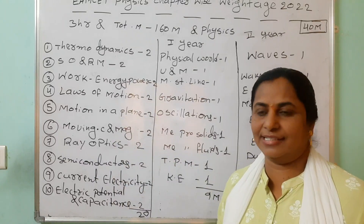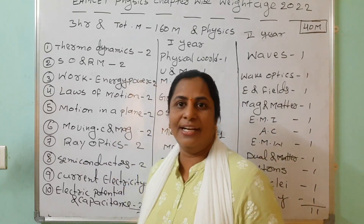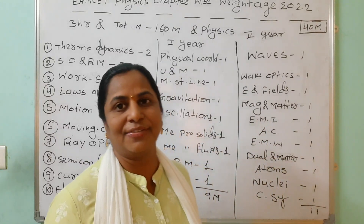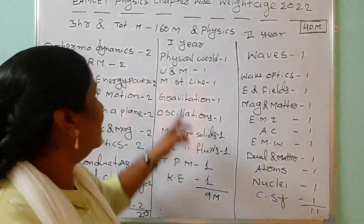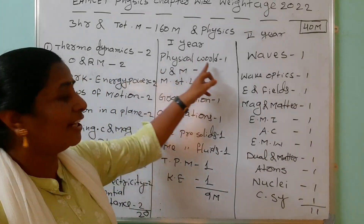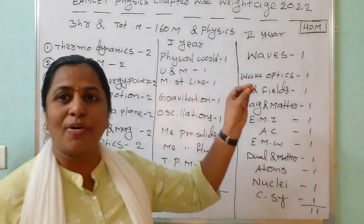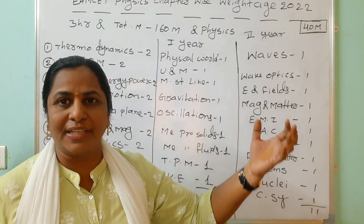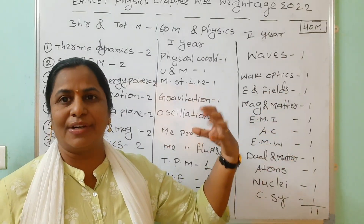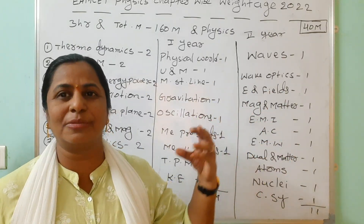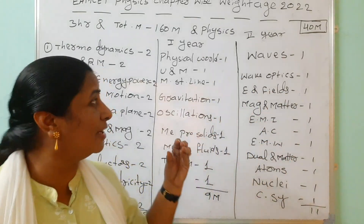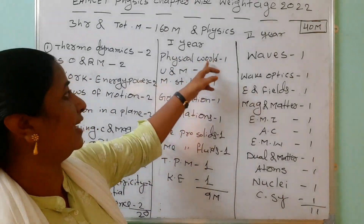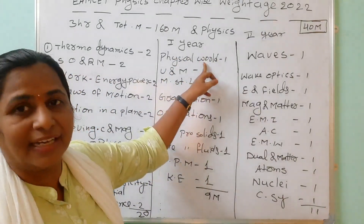Now for the remaining 20 chapters, we are expecting 20 marks. Physical world is a very small chapter — scientist names are there, about Einstein, what is the Chandrasekhar limit — like this, small questions and a small chapter. Sometimes they cover it, sometimes they leave this chapter — that is your wish.